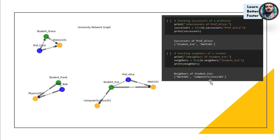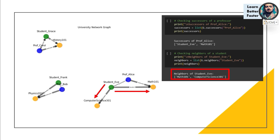If we look at the neighbors concept, that's very similar but a little bit different. If we look at the neighbors of Student Eve, you'll see that Eve actually has two classes: Computer Science and Math 101. Those being classes and the relationship being equal between the two of those is part of the reason why those are considered neighbors as opposed to successors.